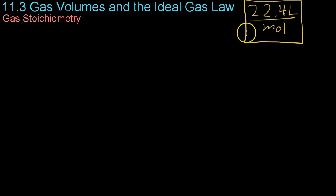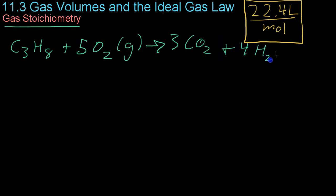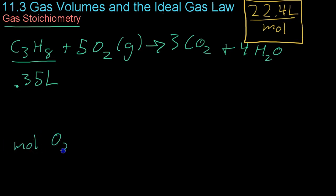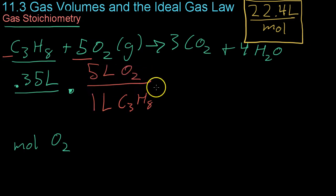Now we'll use this conversion factor in gas stoichiometry. For example, with the combustion of propane, which has the formula C3H8, it combines with five units of oxygen gas to yield three CO2 molecules and four water molecules. Let's say we start with 0.35 liters of methane and want to find how many moles of oxygen we need to completely combust it. We use a volume conversion factor based on the coefficients: for every one liter of methane, we need five liters of oxygen.